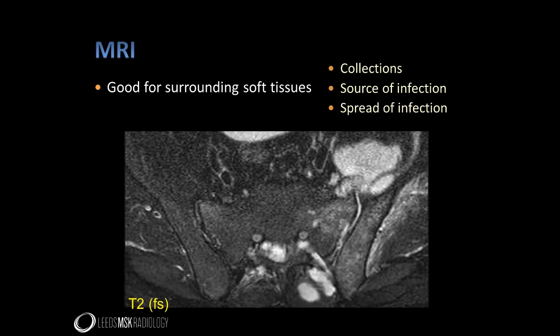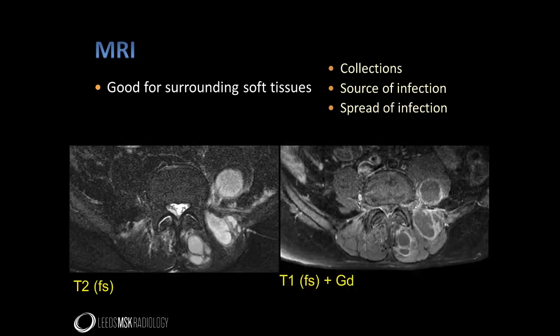This is the case of infective sacroiliitis shown previously. In addition to the joint effusion and bone and soft tissue oedema, we can appreciate periarticular collections both anterior and posterior to the joint. MRI is excellent for showing this periarticular extension of the disease and may also show the source of infection if it has spread from periarticular disease. On a slightly more superior slice, we can see extension of the collection into the psoas and paravertebral musculature, shown with thick enhancing walls on the post-contrast imaging.